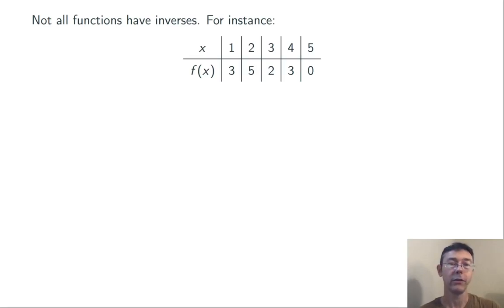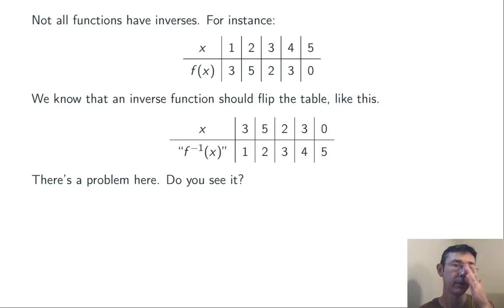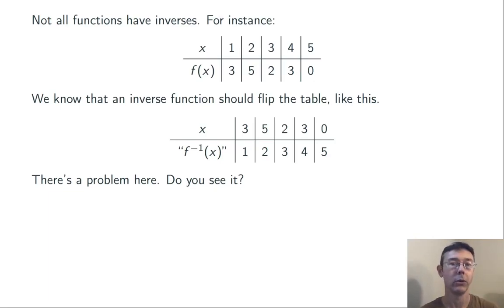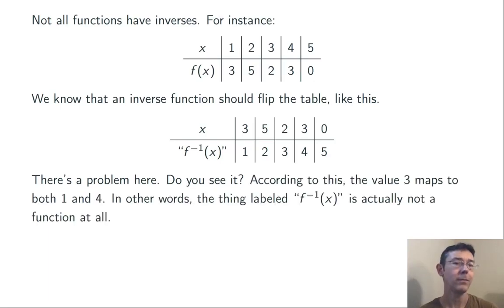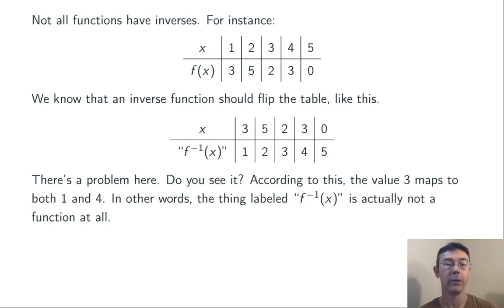Not all functions have inverses, unfortunately. Here's another function defined by a table of values, sending 1 to 3, 2 to 5, and so on. An inverse function would have to flip that table — sending 3 to 1, 5 to 2, and so on. Unfortunately, there's a problem: the value 3 is being mapped to both 1 (in the first column) and to 4 (in the fourth column). So what I've labeled f inverse of x is actually not a function at all, and we certainly shouldn't call it an inverse function.